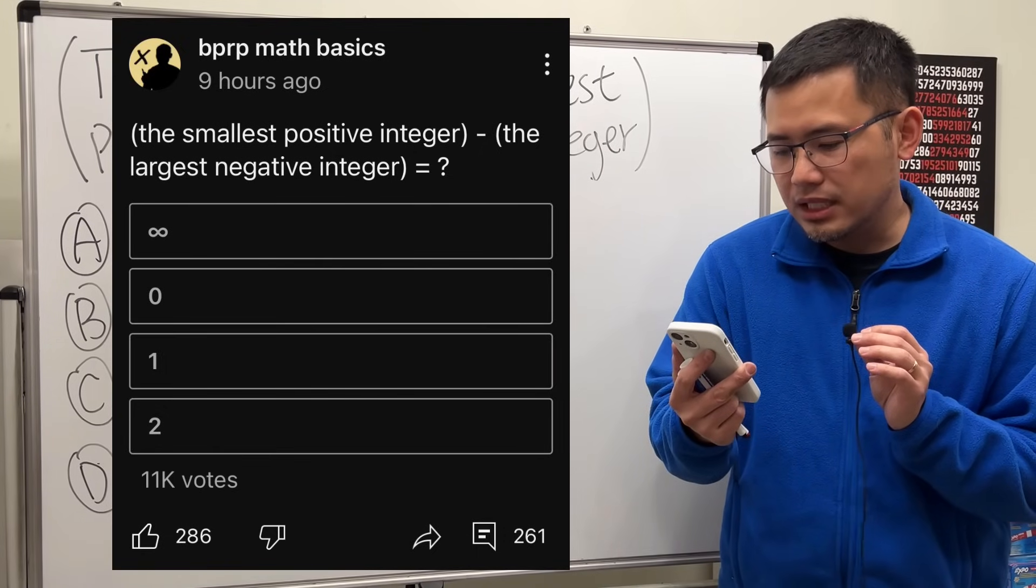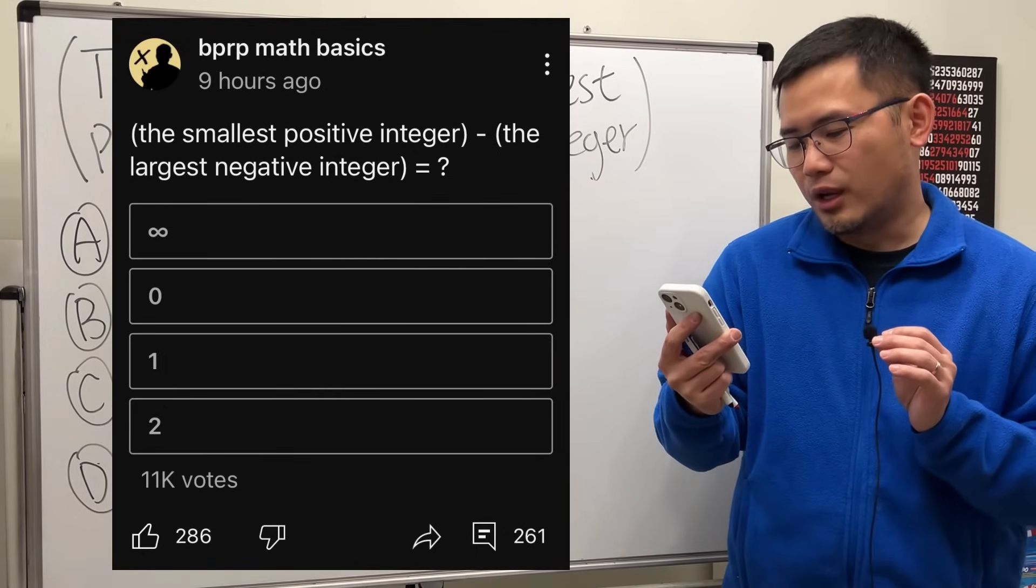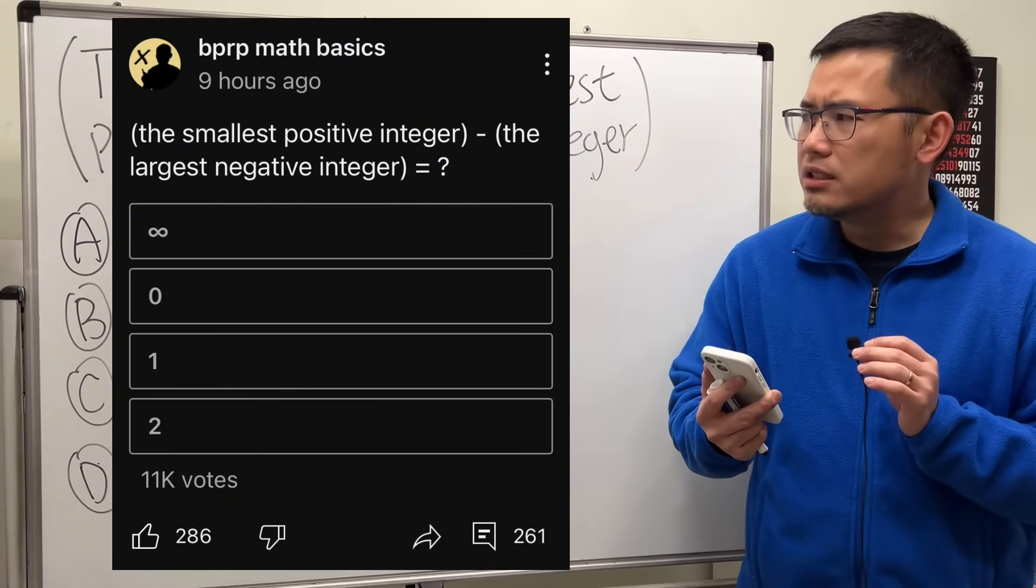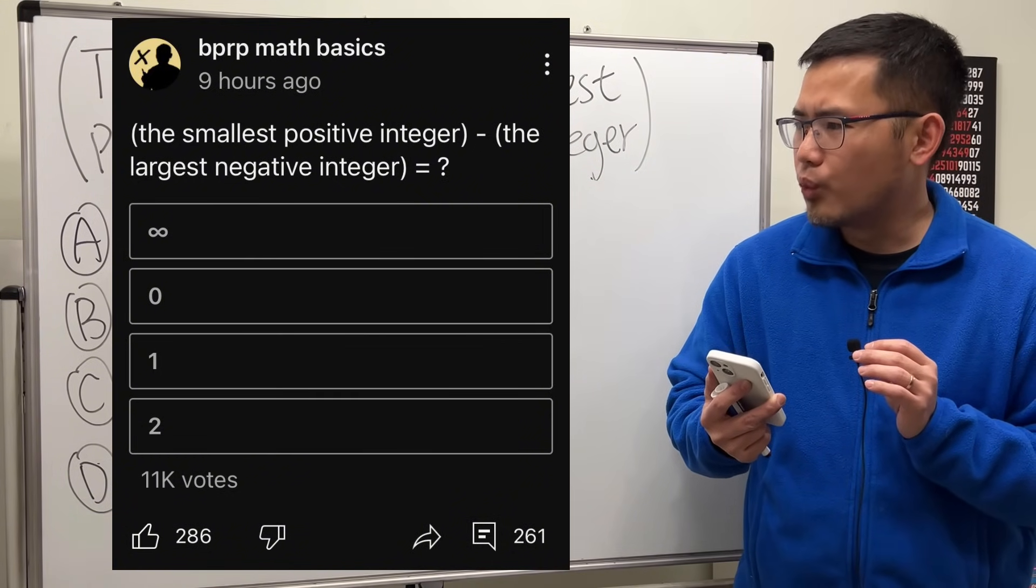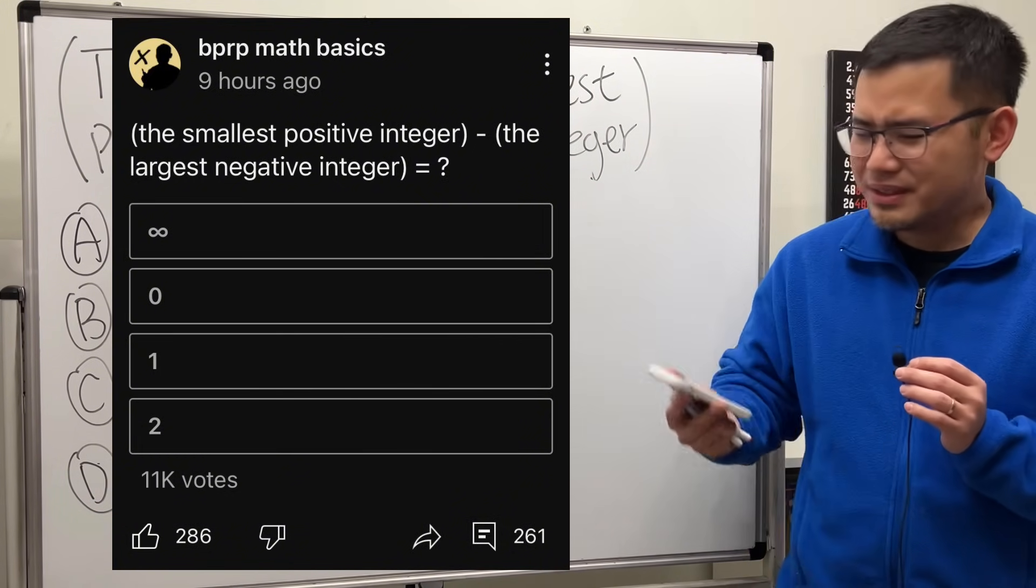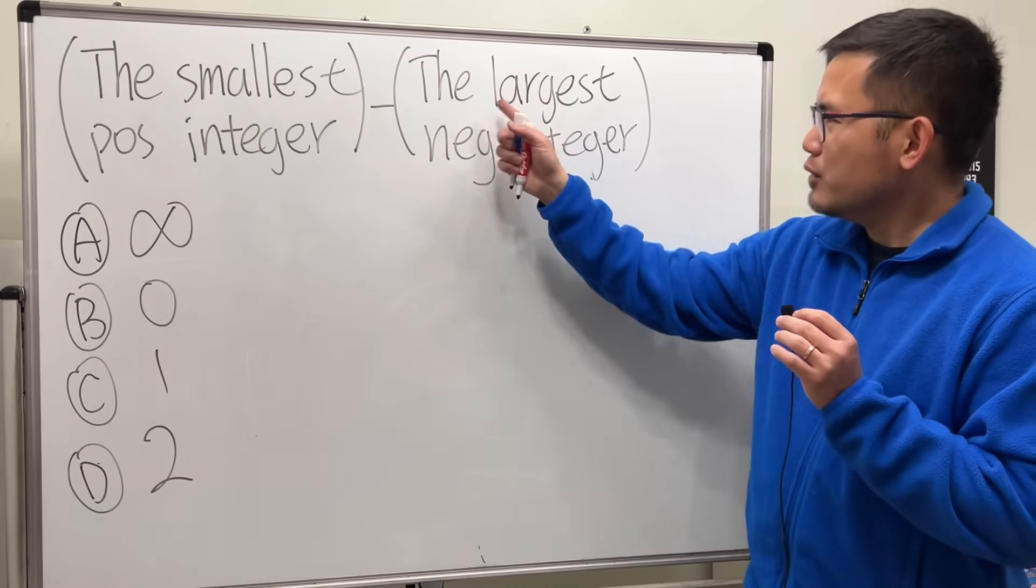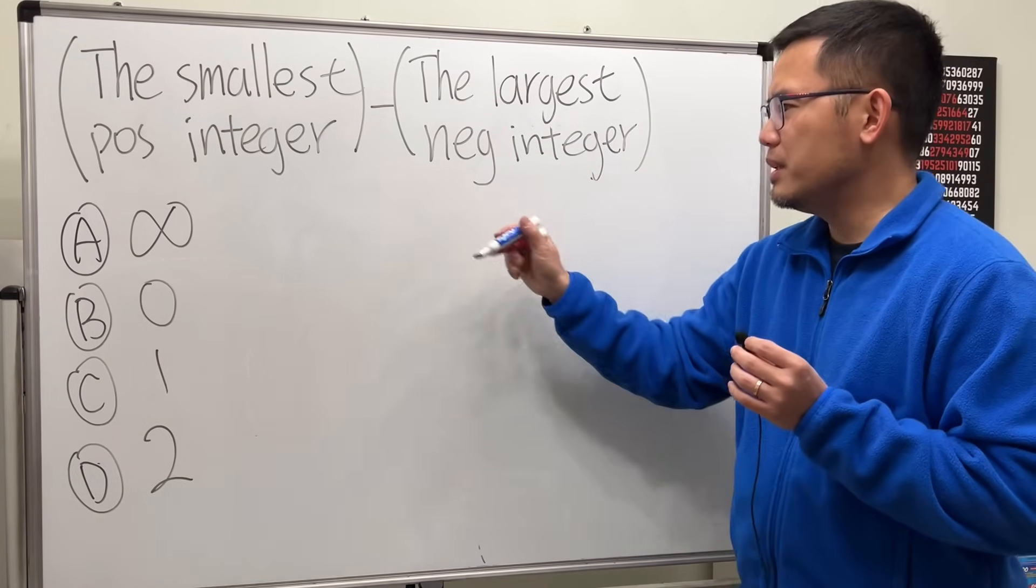What is the smallest positive integer minus the largest negative integer? Is it infinity, zero, one, or two? Well, for the largest negative integer, isn't that going to be negative infinity?